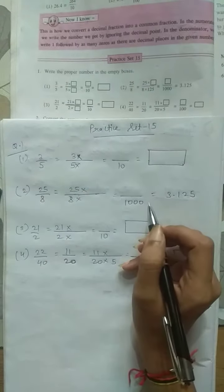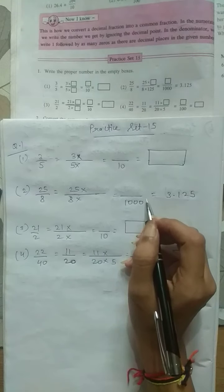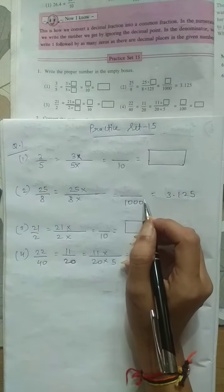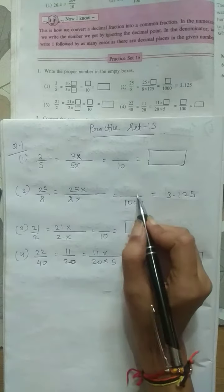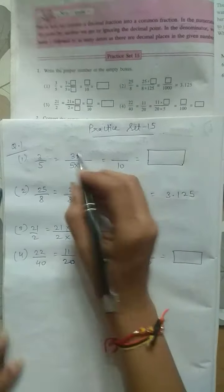We have already seen how to convert. We just have to convert the denominator in terms of tens, hundreds, thousands and so on. Then easily we can convert it into decimal fraction.